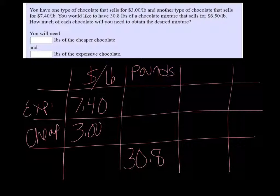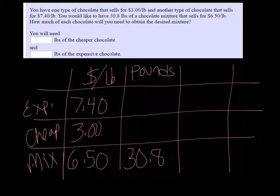And all together the mixture, the mixed chocolate, is going to be $6.50 per pound. So we'll say that we have X pounds of the expensive and Y pounds of the cheap. And then if we multiply those together, we get this total column here.